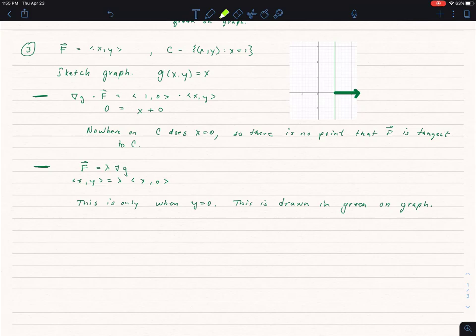However, if I let F equal some constant times the gradient of G, then I find that this is in fact true exactly when y is equal to 0. So only when y equals 0, and that would be the point x equals 1, y equals 0, that F is in fact tangent to the curve C, and I've drawn that in green.